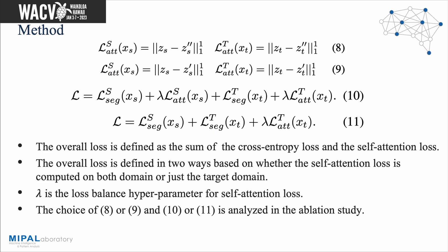The overall loss is defined as the sum of the cross-entropy loss and the self-attention loss. It is defined in two ways based on whether the self-attention loss is computed on both domains or just the target domain. The choice between equations 8, 9, 10, or 11 is analyzed in the ablation study and quantitative analysis.